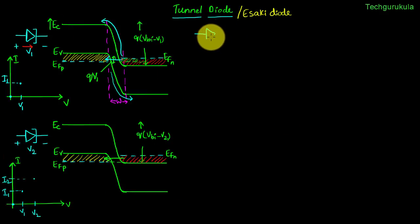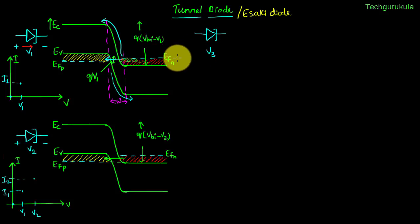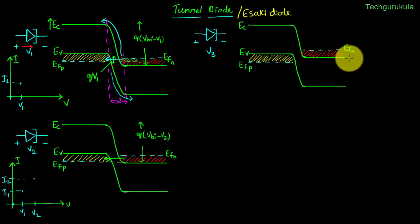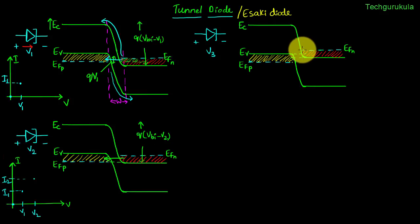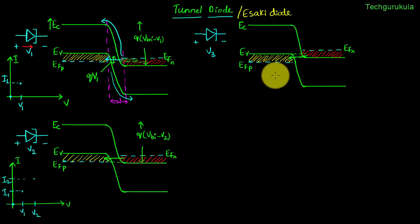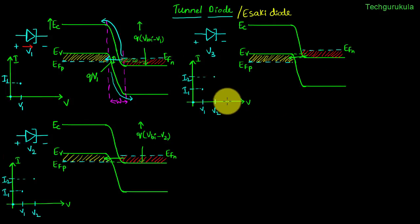Now let us apply more forward bias — let's say V3, which is greater than V2. In the energy band diagram, EFN has gone up and EFP has gone down compared to the V2 case. As a result, the number of electrons that can see the available states decreases compared to the V2 case, so the number of electrons going through the barrier decreases and the current decreases. For V3, somewhere here the current is I3, which is lower.